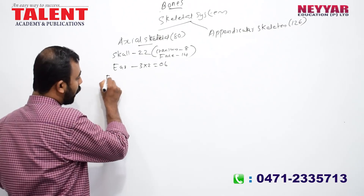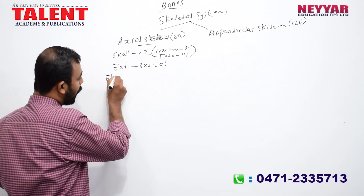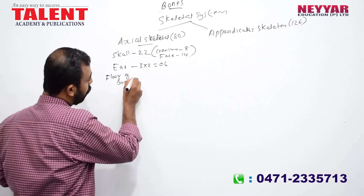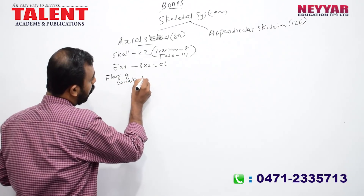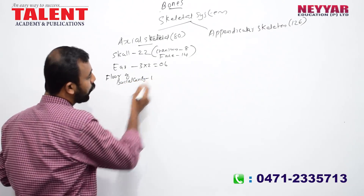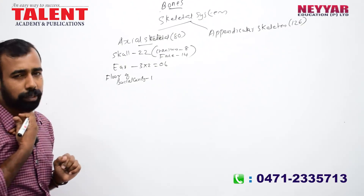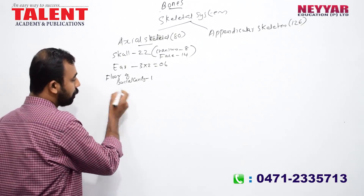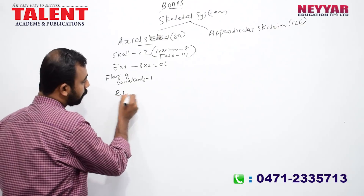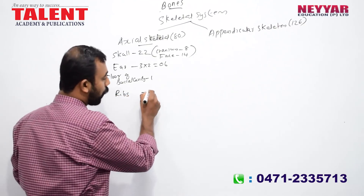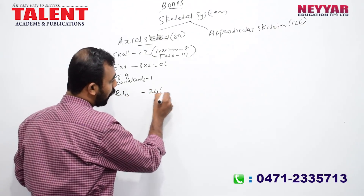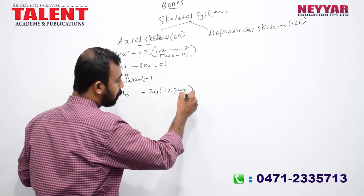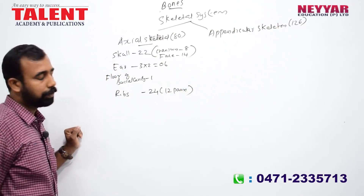The floor of the buccal cavity has a single bone — the hyoid bone. Now we go to ribs. There are 24 ribs total, arranged in 12 pairs.